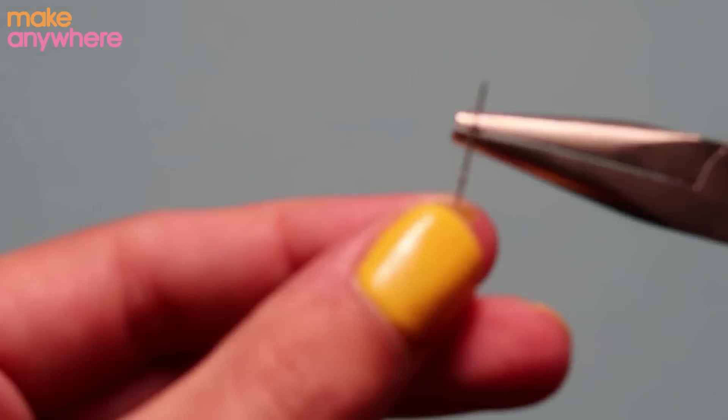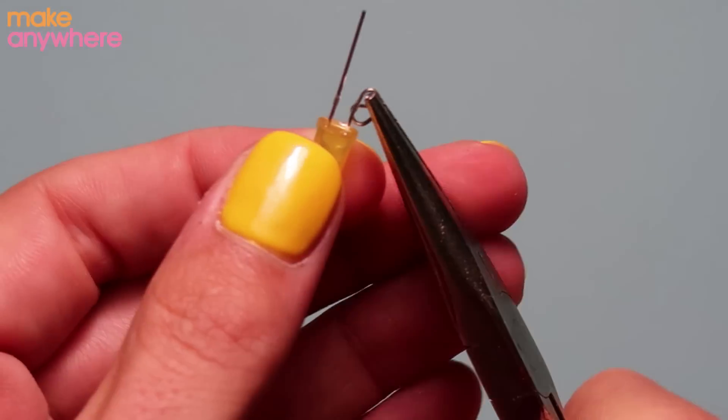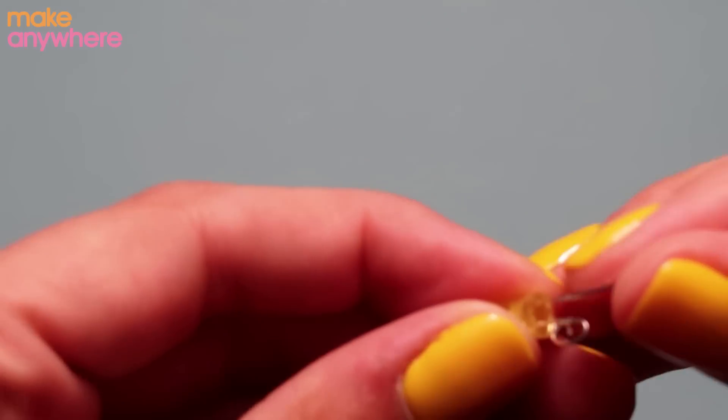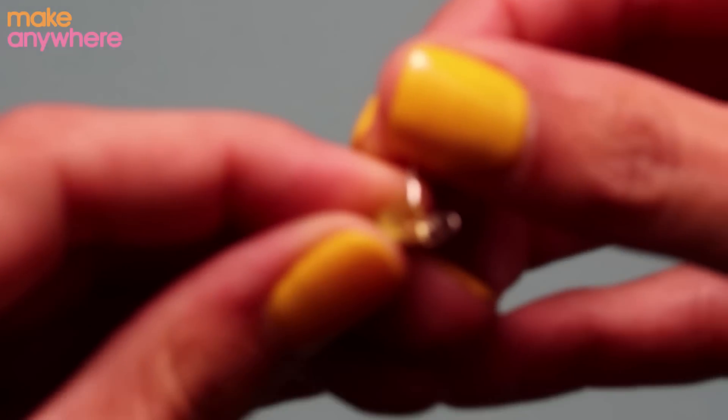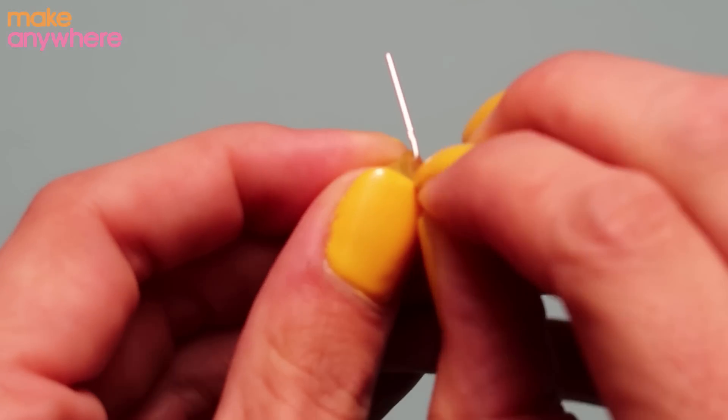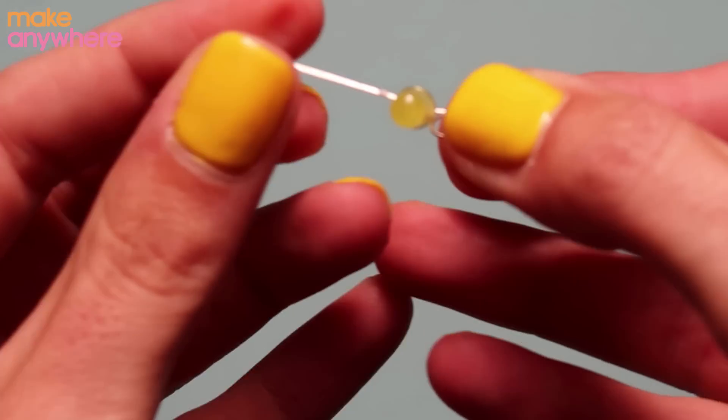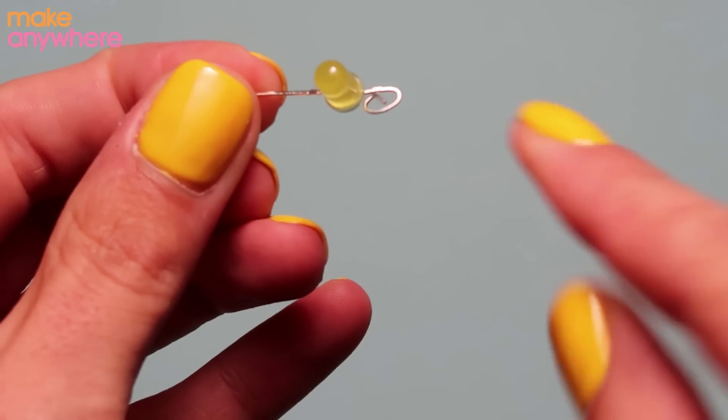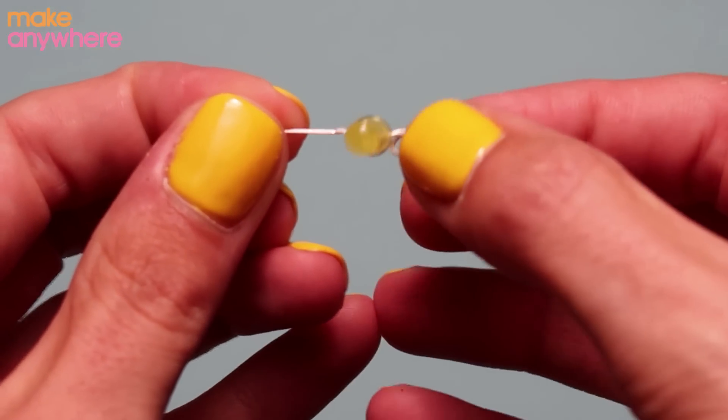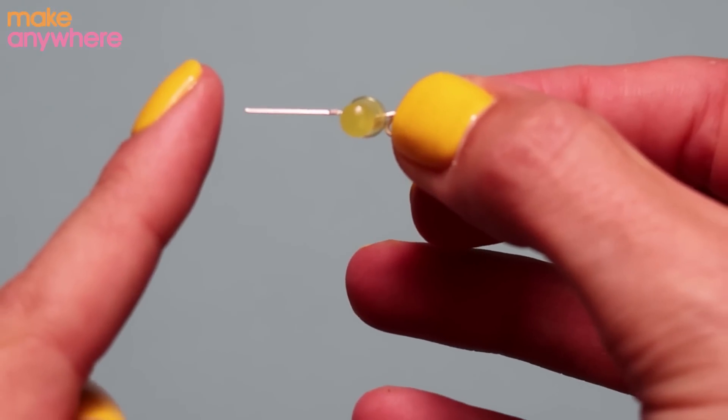Grab your pliers and wrap the leg around the pliers. Now using your finger bend out the negative leg and bend your positive leg flat. So when you look down on your LED you'll have a circle for the positive and straight out for the negative.